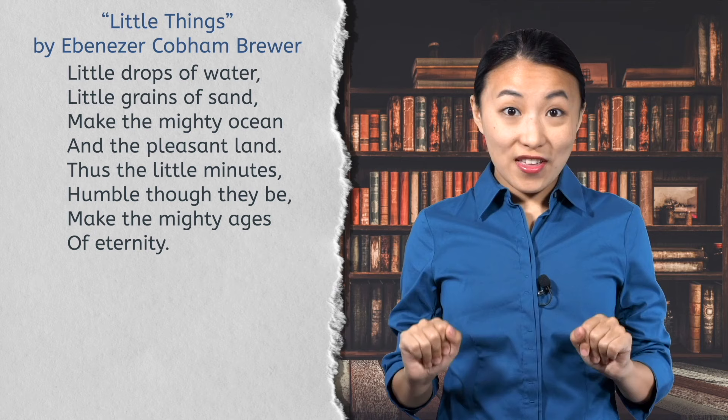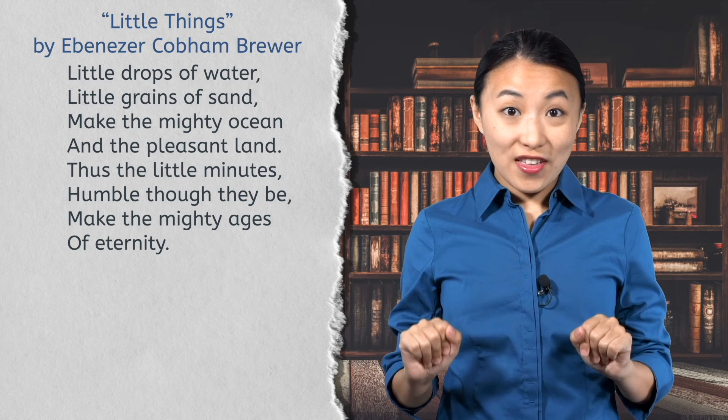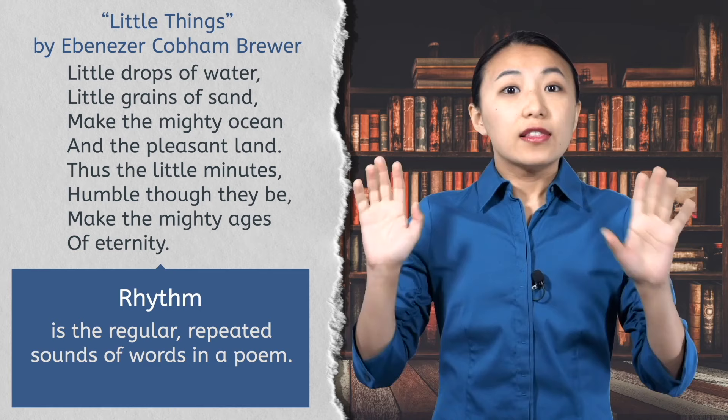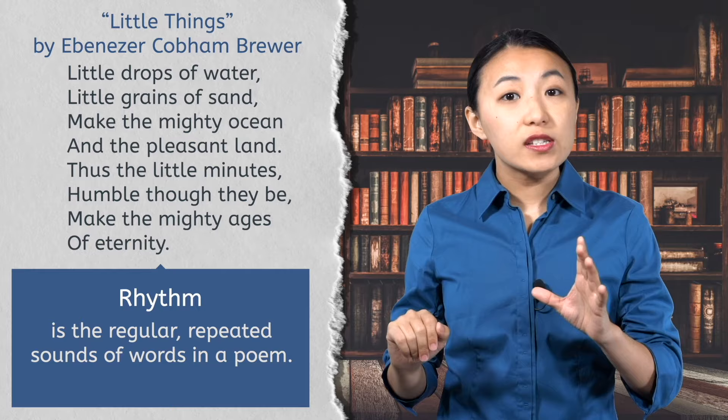I love the rhythm of this poem. Rhythm is the regular repeated sounds of words in a poem. When the poet is talking about things that are small, I hear a quicker rhythm with words with short syllables: 'Little drops of water, little grains of sand.' Then the rhythm changes for the last line to put an emphasis on the word 'eternity.'